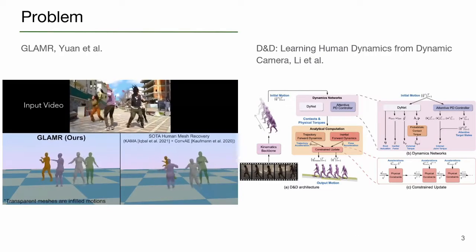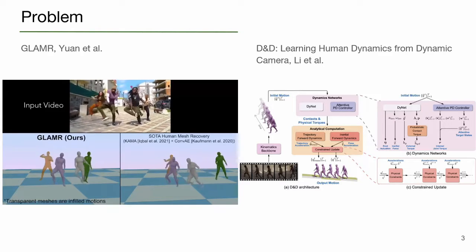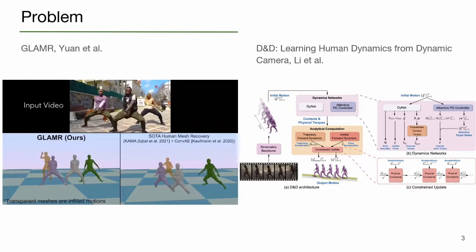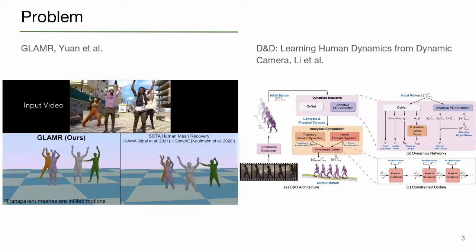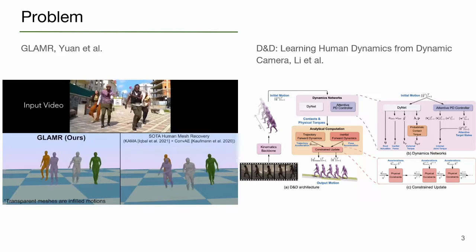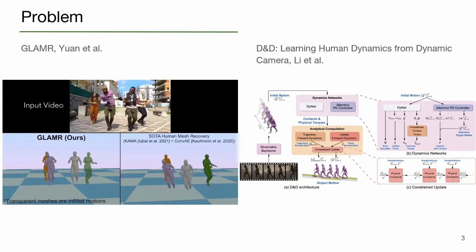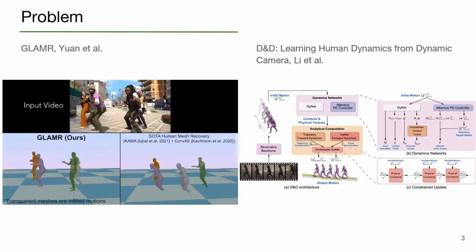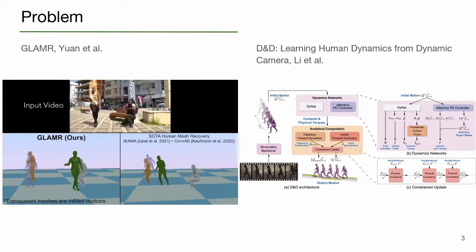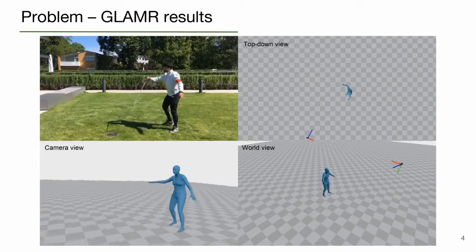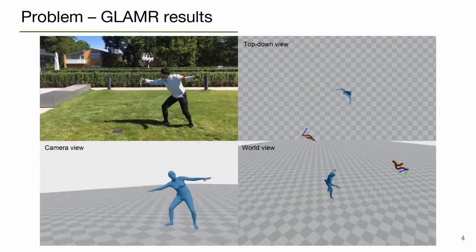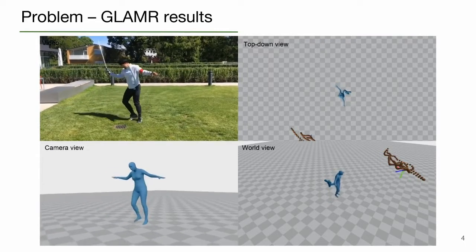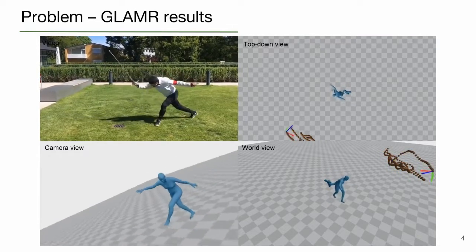There are only a few works that address the problem of global human pose estimation. These methods leverage the insight that the global human root trajectory is correlated with the local body movements. Therefore, they suggest that global root trajectories can be estimated by learned motion priors or by enforcing physics-based constraints on the reconstructed human motion. As can be seen in this sample result from Glamour, local body motion is not enough to fully resolve the ambiguity and recover the global trajectories.